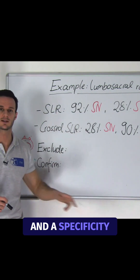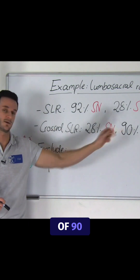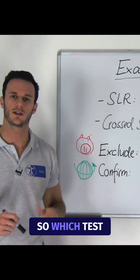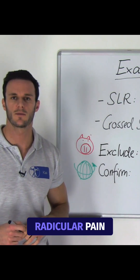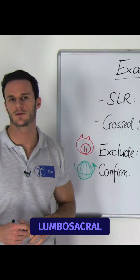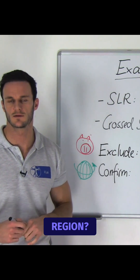and the crossed SLR has a sensitivity of 28% and a specificity of 90%. So which test are you going to use to exclude radicular pain from the lumbosacral region?